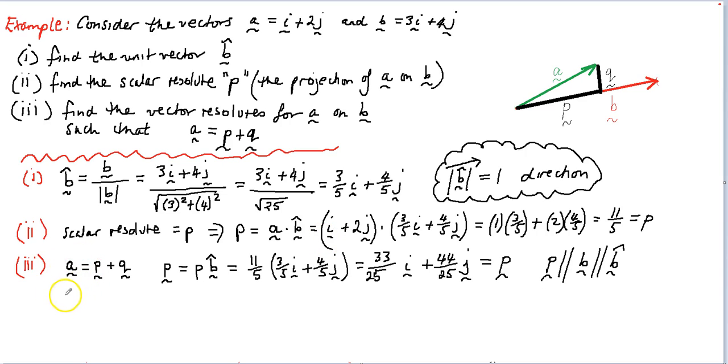Now, with doing a little bit of vector arithmetic, we can, by vector subtraction, work out that Q, the vector Q, can be found by subtracting the vector P from the vector A. So this will give us Q. So Q is going to be equal to I plus 2J minus the vector P that we worked out in the previous part, which is 33 on 25 I plus 44 on 25 J.